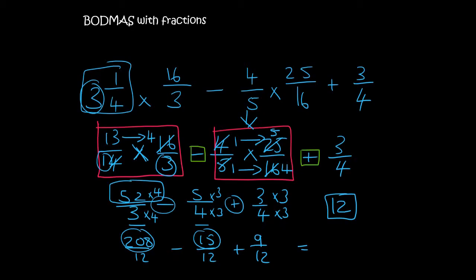Teachers don't mind if you use a calculator. They just want to see all of your little steps. And so that will give you 193. Then 193 plus 9 is 202 over 12.